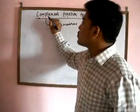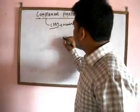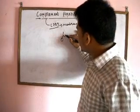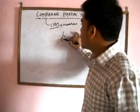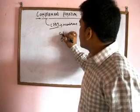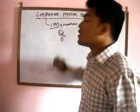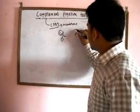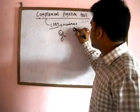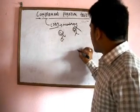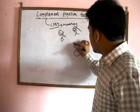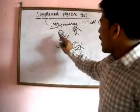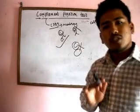The complement can only be fixed in an antigen-antibody complex. If there is only the antibody, the complement cannot be fixed. If there is only the antigen, the complement cannot be fixed either. It can only be fixed when both antigen and antibody are present as a complex.